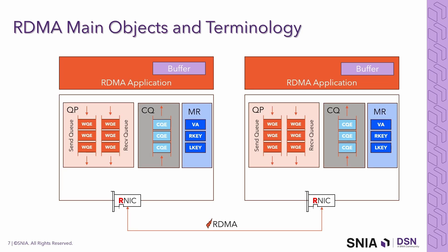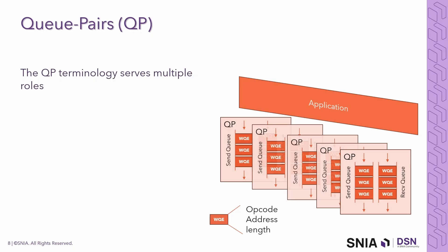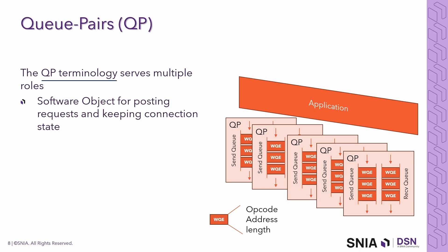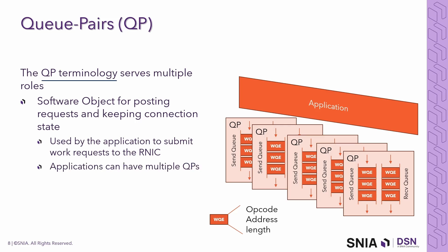It's hard to explain how things work without understanding some key objects and terminology. The RDMA application communicates with the RNIC via a software library that provides APIs to create RDMA objects. I'll talk about Queue Pairs and completion queues, and leave more time to dive into the details of memory regions. Queue Pairs serve multiple roles: they are a software object used by the application to post requests for RDMA operations, and they encapsulate the state and configuration needed for communication. The QP maps to a hardware resource in the RDMA NIC, which executes the work request and handles packet generation, parsing, and protocol compliance.